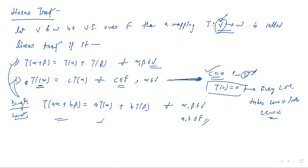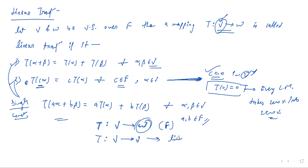Generally, a linear transformation T goes from vector space V to W, and both vector spaces must be over the same field of scalars F. If the co-domain space W equals V itself, then T is called a linear mapping on V. If the co-domain W is the field F (regarded as a vector space over itself), then the mapping is called a linear functional.